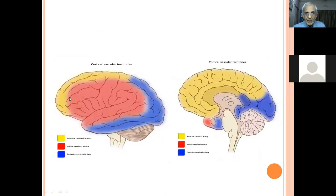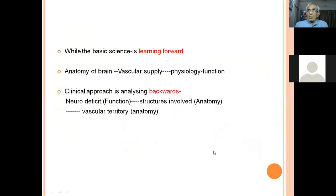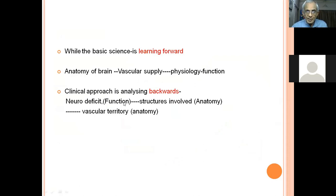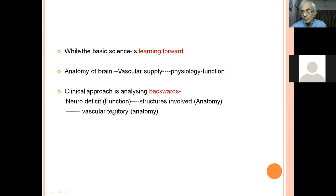The motor strip and language strip are all supplied by the middle cerebral artery; the visual part is supplied by the posterior cerebral artery. In basic science learning we go forward: anatomy, vascular supply, then physiology. In clinical analysis we go backwards: identify the deficient function, determine which brain part is affected, then identify the blood supply. So a hemiplegia tells us the contralateral frontal lobe is involved, supplied by the middle cerebral artery.